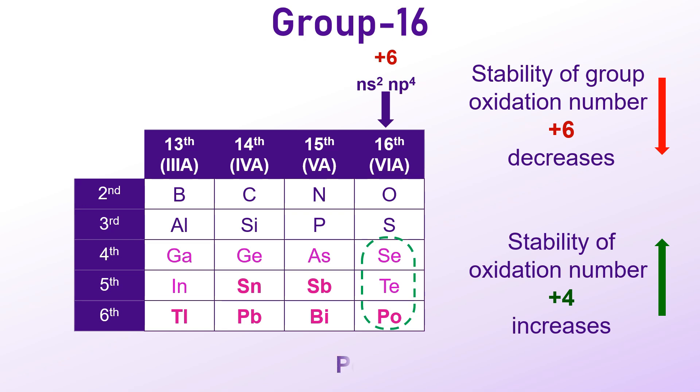Polonium, for instance, is predominantly stable in the +4 oxidation state, with the +6 oxidation state being highly unstable due to the strong inert pair effect.